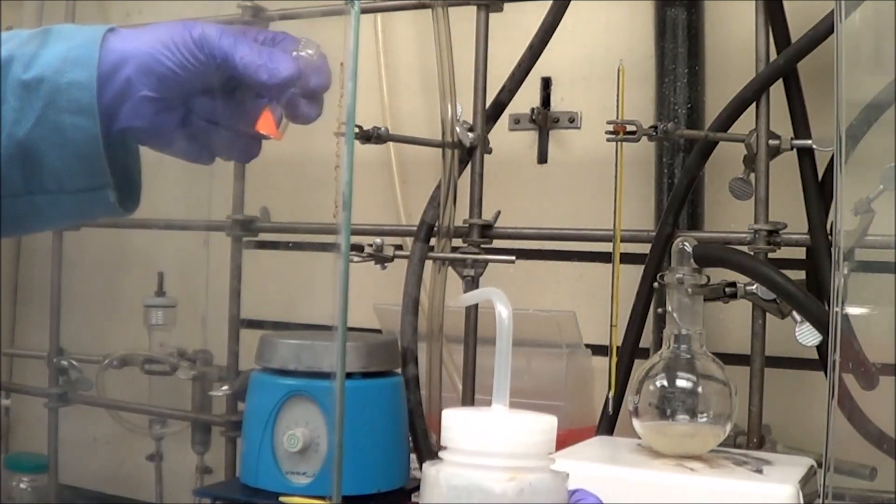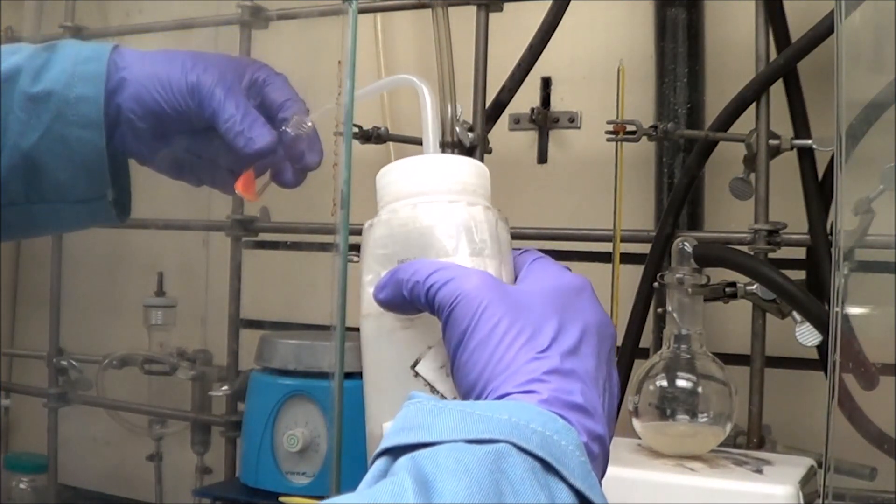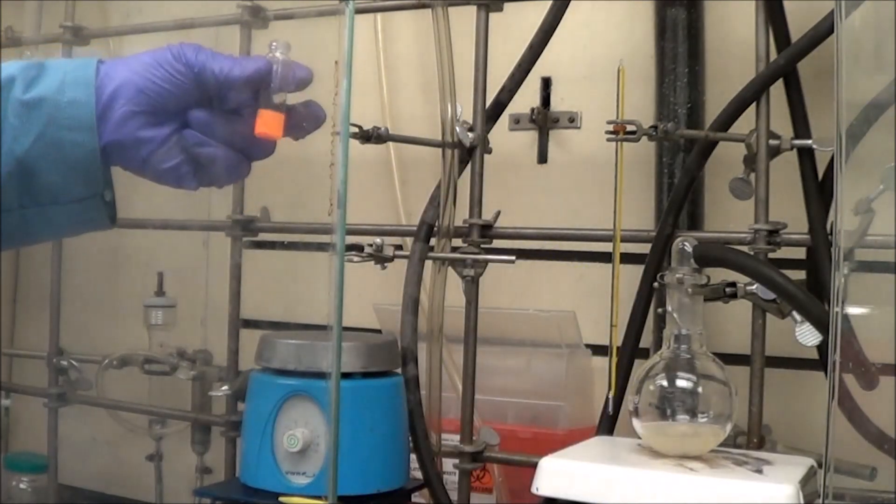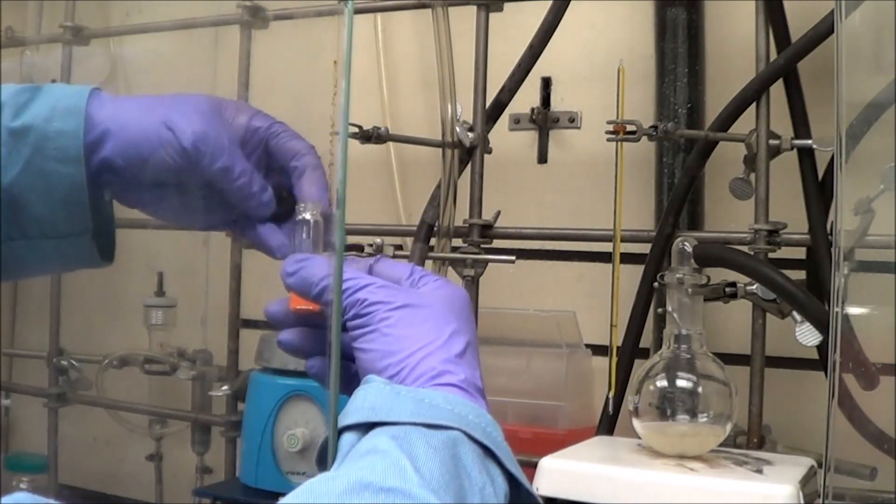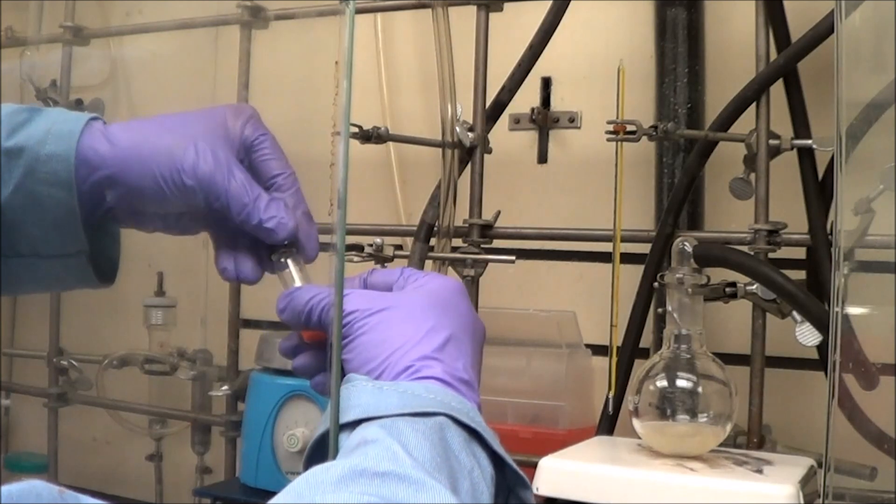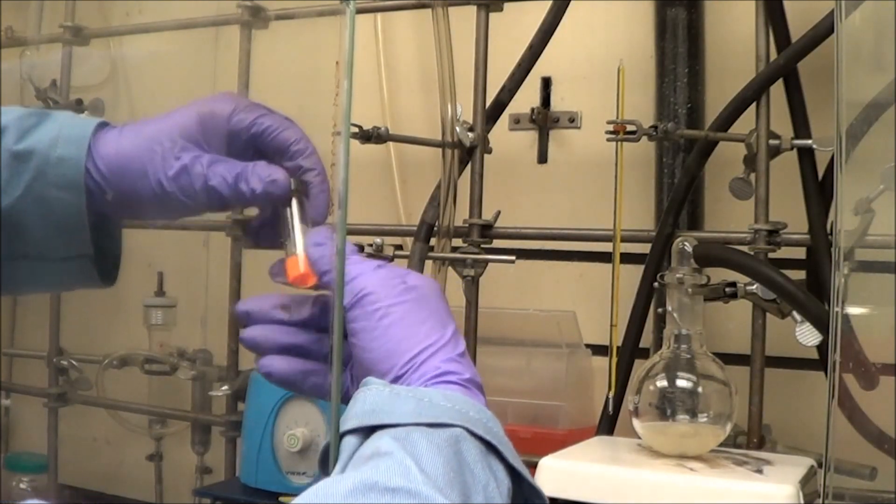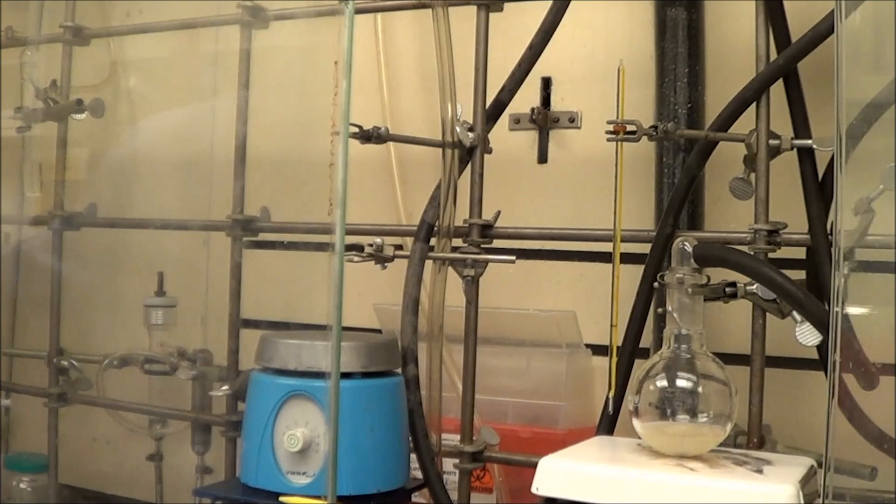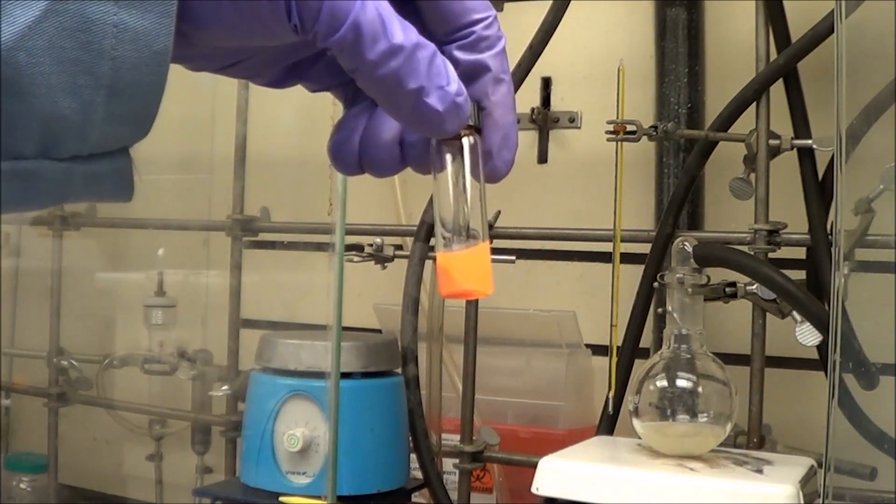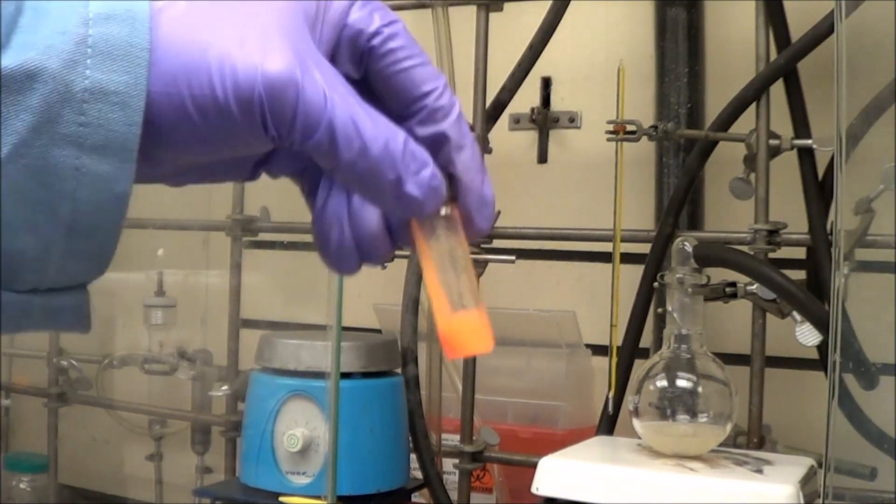Now to do so, I first remove the supernatant, and then I'm going to add some hexane, not too much, just about two mils, and then I'm going to break up that paste, and sometimes I have to use a lot of force to do so. I'm going to break up the paste so the hexane can extract the QDs from that paste.